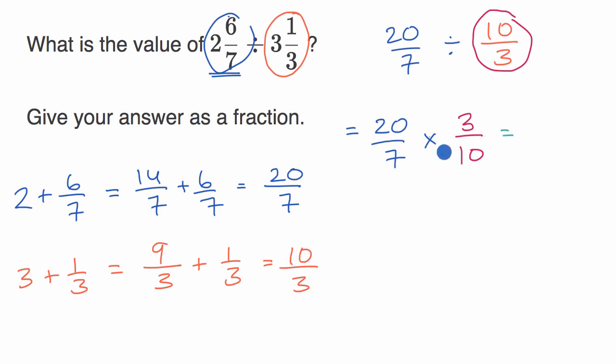There's several ways that we could tackle this. We could try to simplify first, or we could multiply and then simplify. I like to simplify first. In our numerator, we have a 20, in our denominator we have a 10. If we divide both of those by 10, the 20 becomes a two, the 10 becomes a one. So we have two times three in the numerator, which is six, and then seven times one in the denominator, seven.